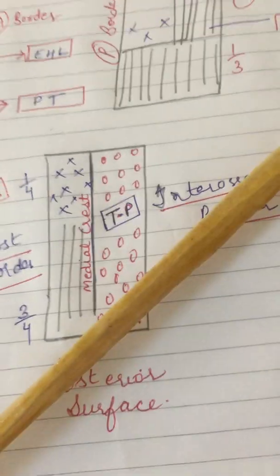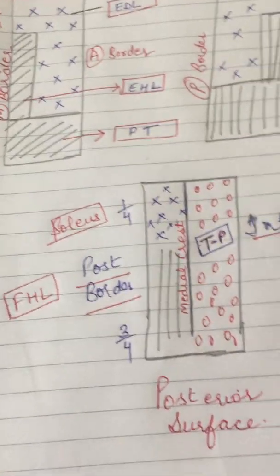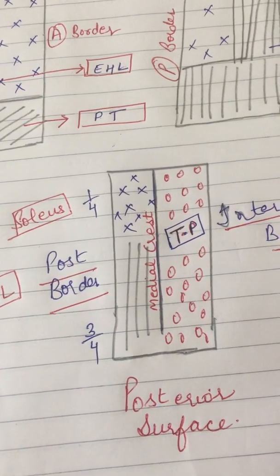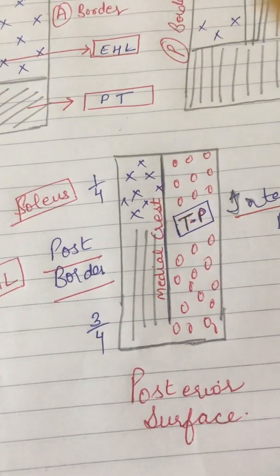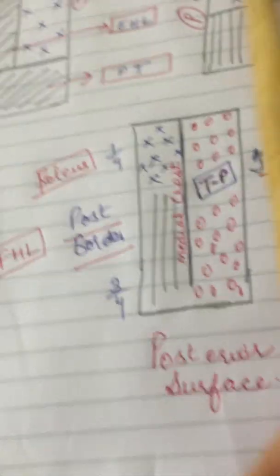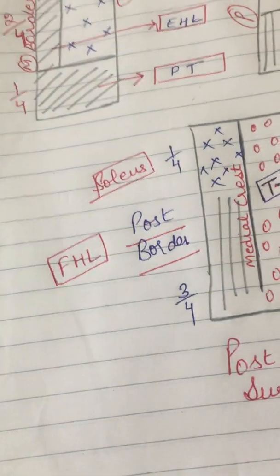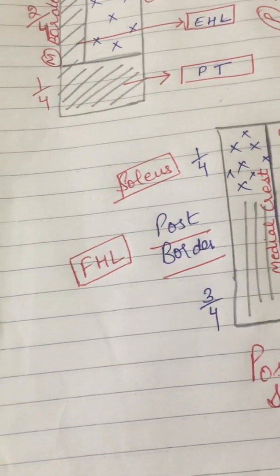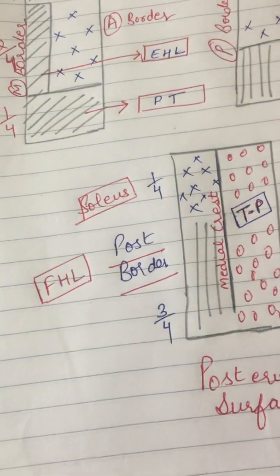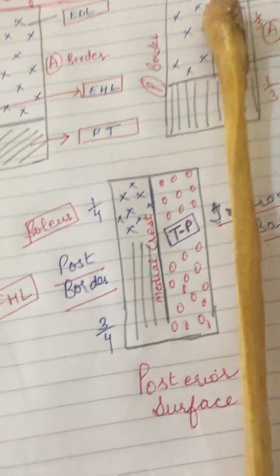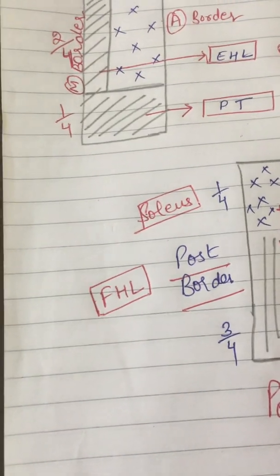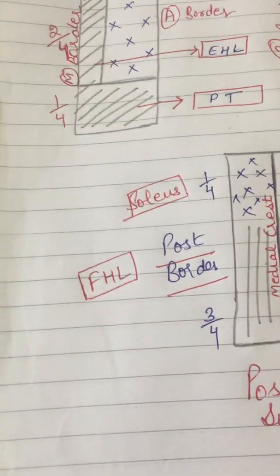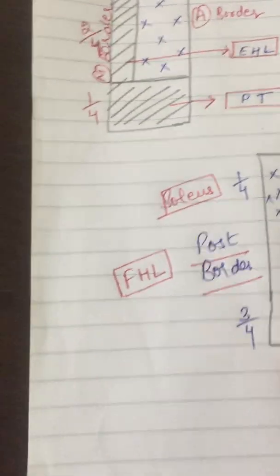The surface we are left with is the posterior surface. The posterior surface is divided into two parts by a crest. This crest is present in the upper three-fourths, dividing it into a grooved part and a posterior part.